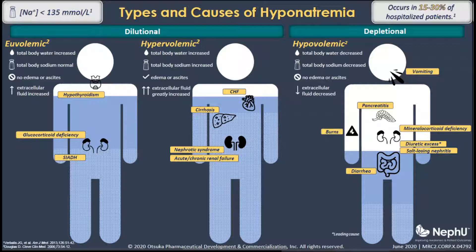First is hypovolemic hyponatremia, where we have a low total body water and a low total body sodium, in which the sodium deficit exceeds the water deficit. We see a reduced extracellular fluid level with no edema or ascites on physical exam. When we look at the composition of the plasma, we see an elevated BUN, an elevated creatinine, and an elevated BUN to creatinine ratio.